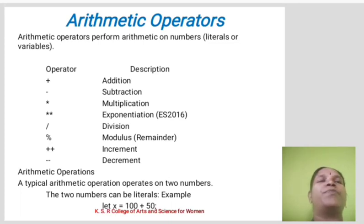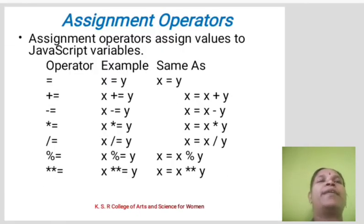Assignment operators. Assignment operators assign values to JavaScript variables. Operator, example, same as: equal to x equals y. Increment operator: plus equals, x plus equals y.